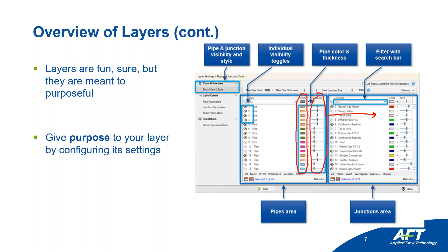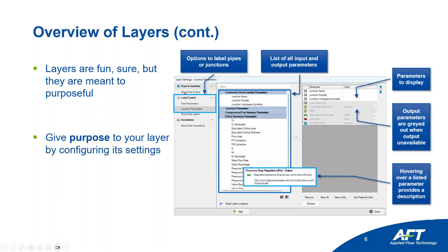That pipe coloring used to be done inside the pipes themselves — now it's done inside layers. We wrapped up all the color and size settings into layers. Now the next section of the settings is label control. The first section was whether pipes or junctions show; this section is about what parameters and output you want to associate with those pipes and junctions — very similar in idea to visual report.